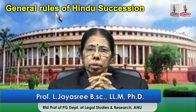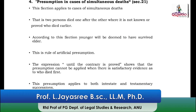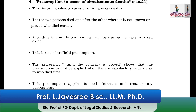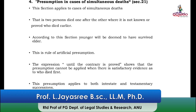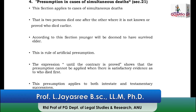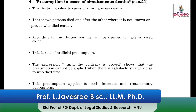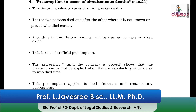Section 21 lays down a presumption in case of simultaneous death. This section applies in cases where two persons died one after the other and there is no evidence, no proof, and it is not known to anybody who died earlier.